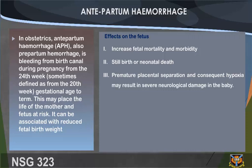Antepartum hemorrhage (APH), also called prepartum hemorrhage, is bleeding from the birth canal during pregnancy from the 24th week of gestational age (sometimes defined from the 20th week). This may place the life of the mother and fetus at risk and can be associated with reduced fetal birth weight.